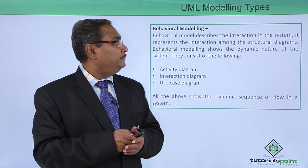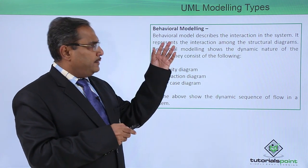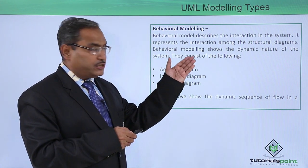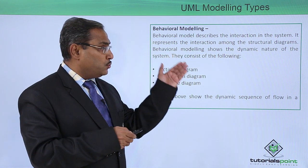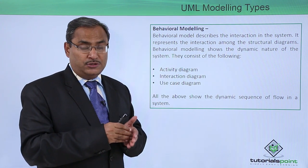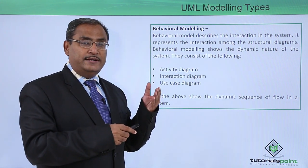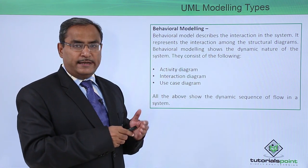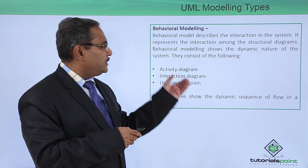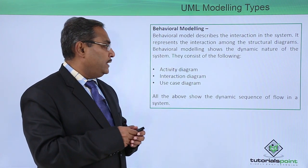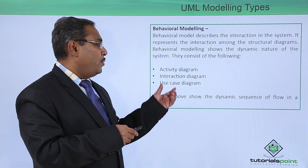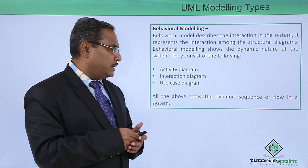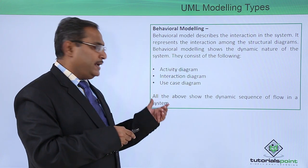Behavioral modeling describes the interaction in the system. It represents the interaction among the structural diagrams and shows the dynamic nature of the system, whereas structural modeling deals with static features. Behavioral modeling consists of the activity diagram, interaction diagram, and use case diagram. All of these show the dynamic sequence of flow in a system.